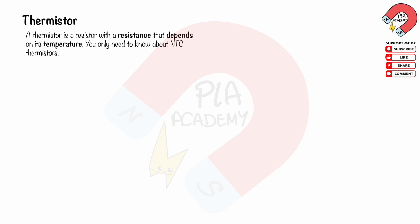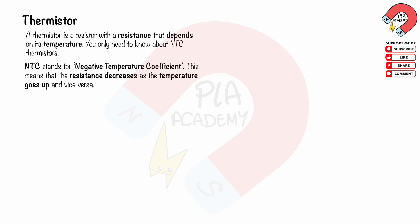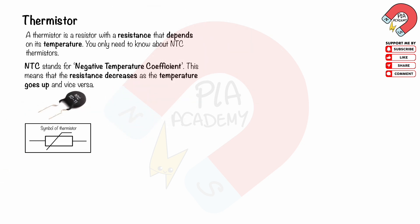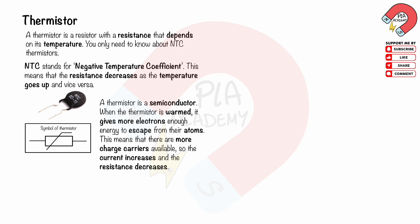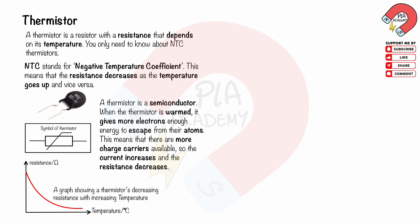A thermistor is a resistor with a resistance that depends on its temperature. You only need to know about NTC thermistors. NTC stands for Negative Temperature Coefficient, meaning that resistance decreases as temperature goes up. A thermistor is a semiconductor. When the thermistor is warmed, it gives more electrons enough energy to escape from their atoms. This means that there are more charge carriers available, so the current increases and the resistance decreases. The graph shows the thermistor's resistance plotted against temperature, showing decreasing resistance with increasing temperature.